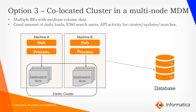Now, in most MDM installations, for higher environments, MDM is typically clustered or installed on multiple machines. You can tie down the clustered MDM or a multi-node MDM with a co-located cluster approach, wherein all the machines that host MDM also have a single Elasticsearch node running on each of them. By clustering together multiple Elasticsearch nodes, you can create an Elasticsearch cluster. This kind of setup is ideal for an implementation with multiple BEs with medium to high volume data, implementations that see a good amount of daily loads, E360 searches, API activities, and so on.